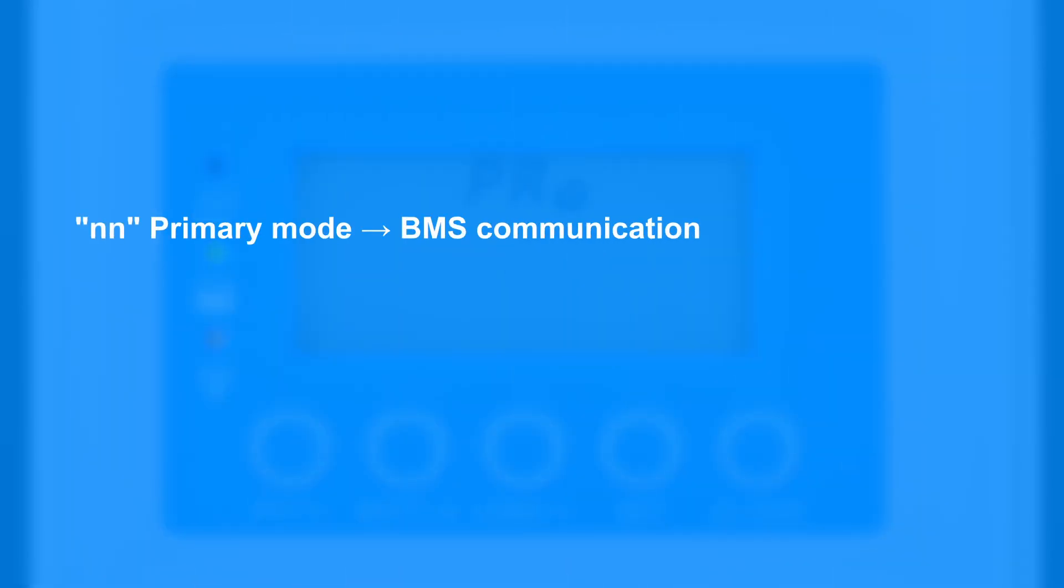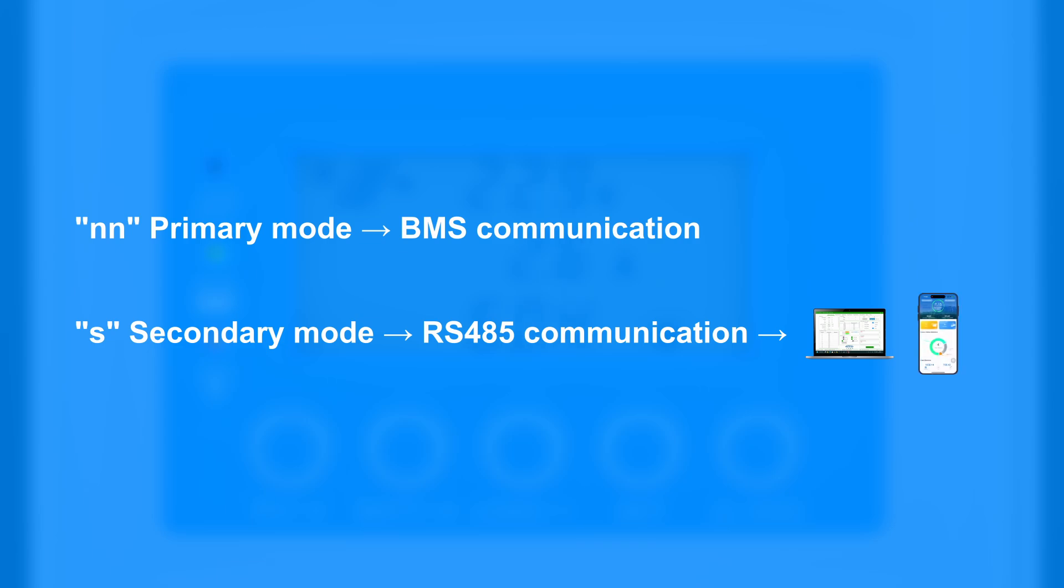N-n primary mode is used for BMS communication, while secondary mode is used for RS-485 communication. If you're using PC software or the app to configure battery parameters, the controller must be in secondary mode. For direct battery communication, primary mode is required. Although the device is set to primary mode by default, we recommend double-checking the setting to ensure proper operation.